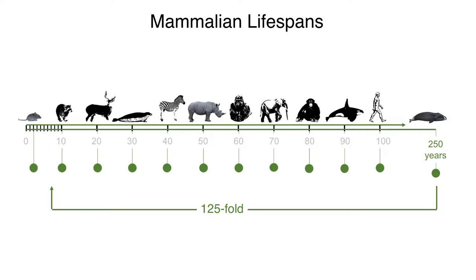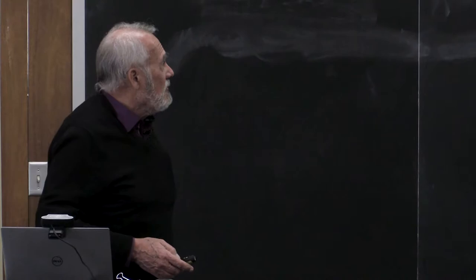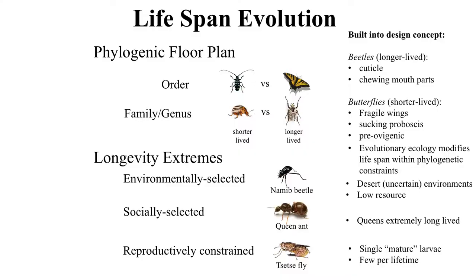The more interesting question is: what factors favor the evolution of lifespan extremes? Why do we get a several-thousand-fold difference in evolved lifespans? This relates to what I call the phylogenetic floor plan — or body plan for biologists — which is basically the evolutionary starting point. Long-lived groups and short-lived groups have longevity built into their design.